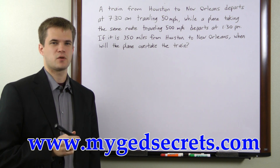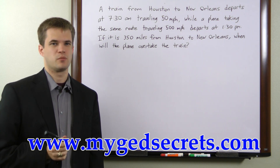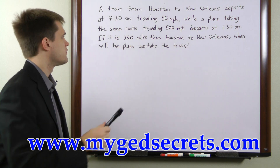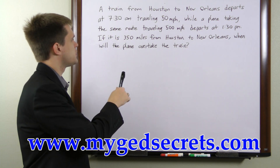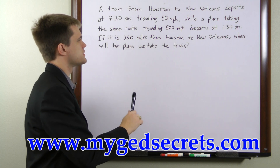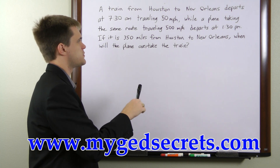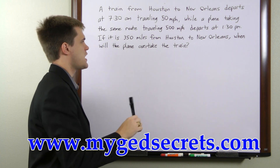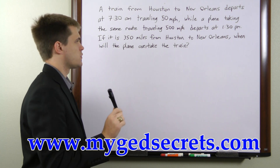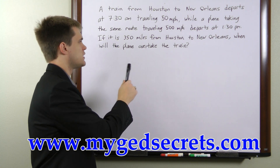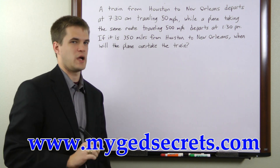Here we have a basic relative position problem. We have a train and a plane traveling the same route at different speeds and departing at different times. And we're asked when will the plane overtake the train?